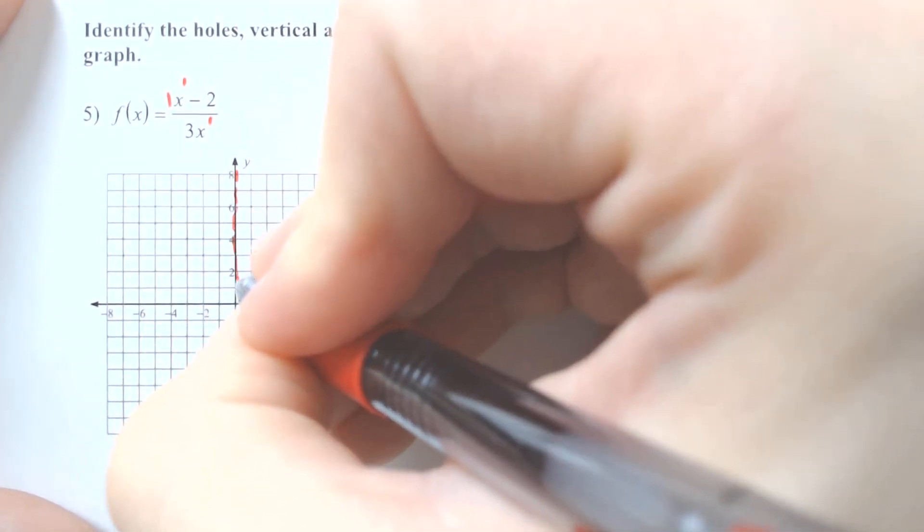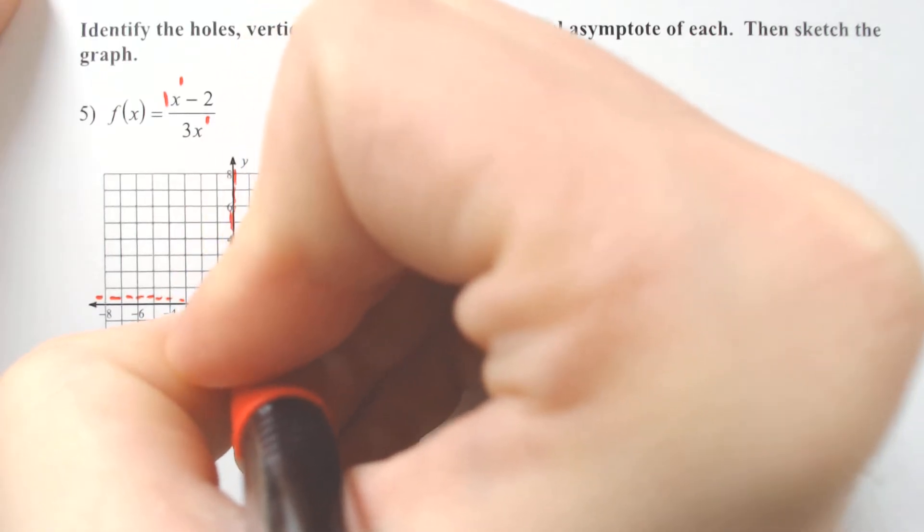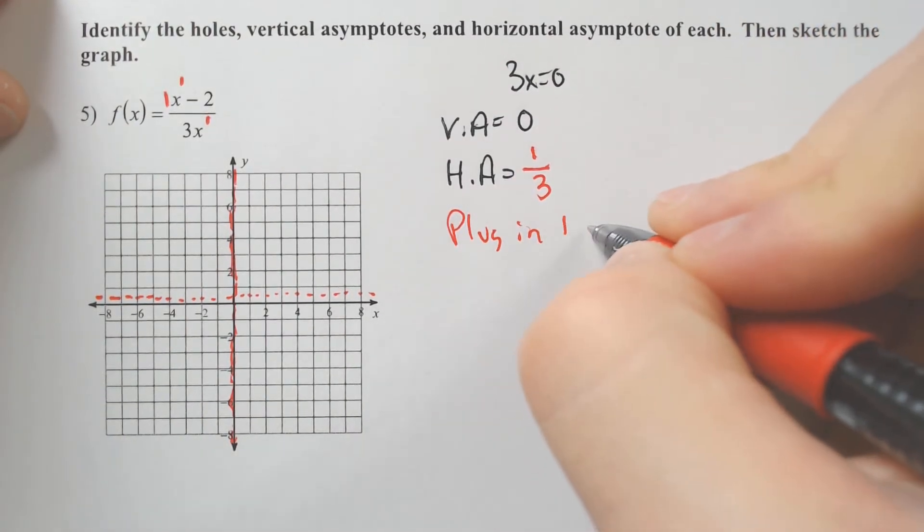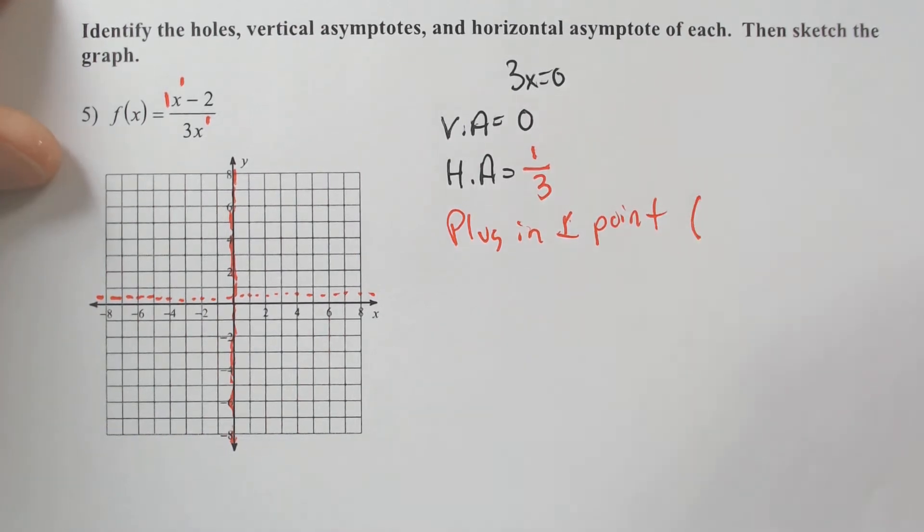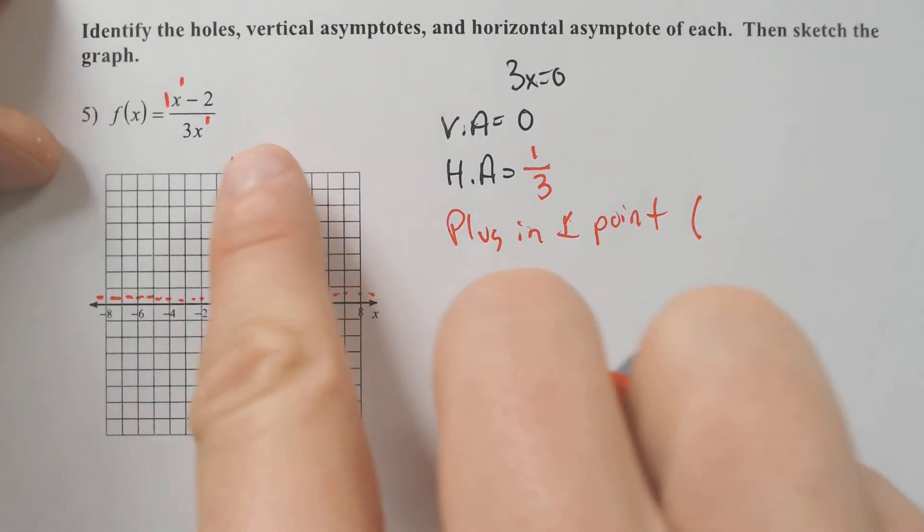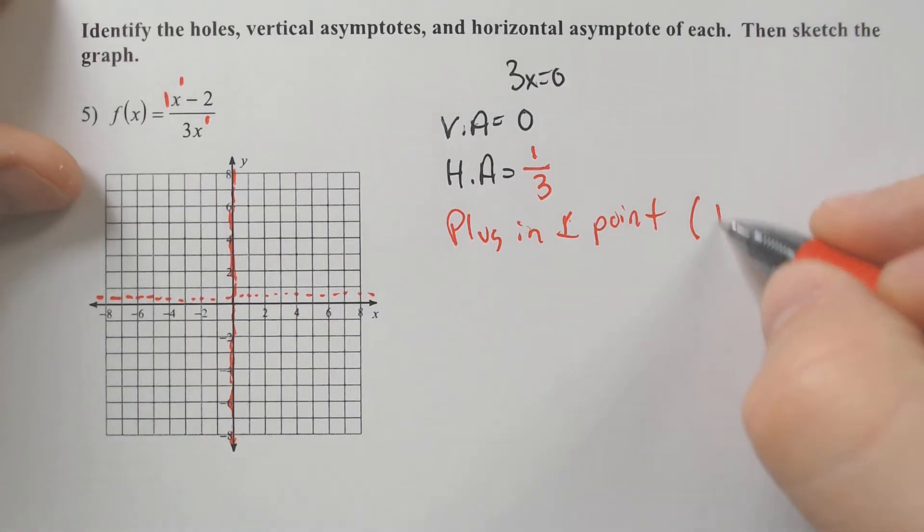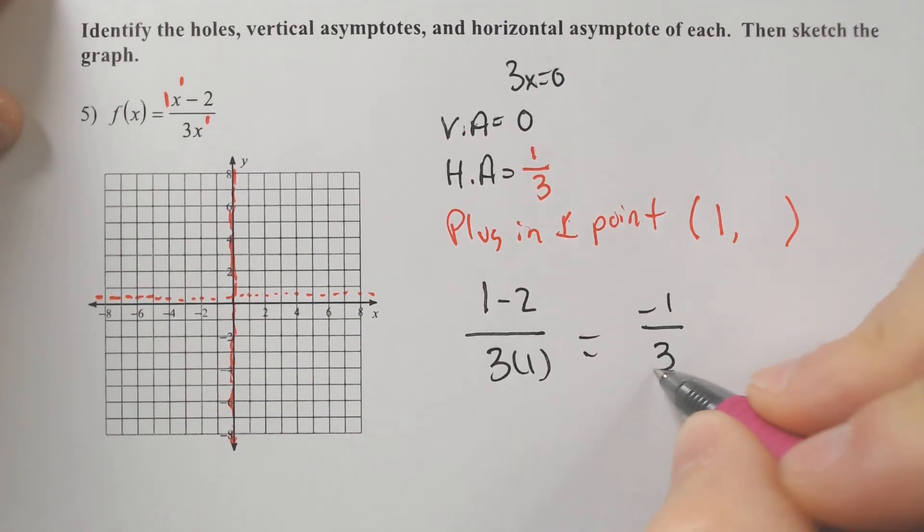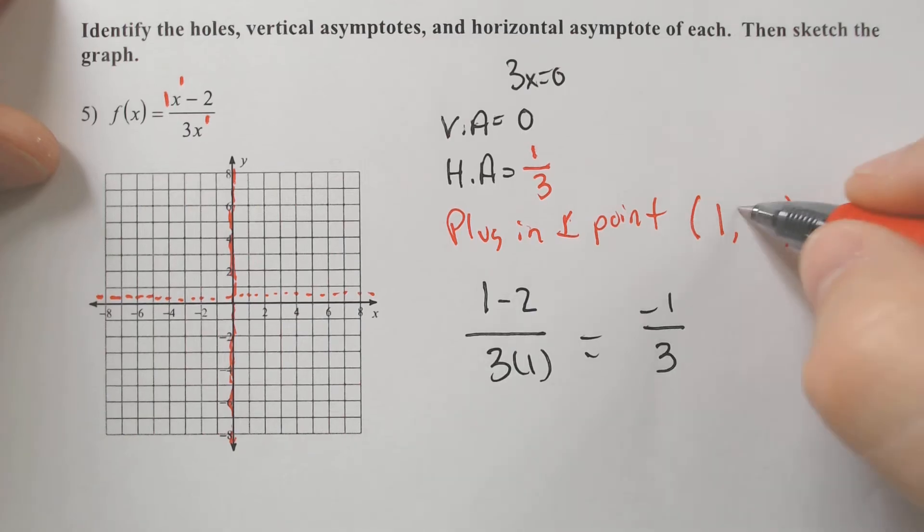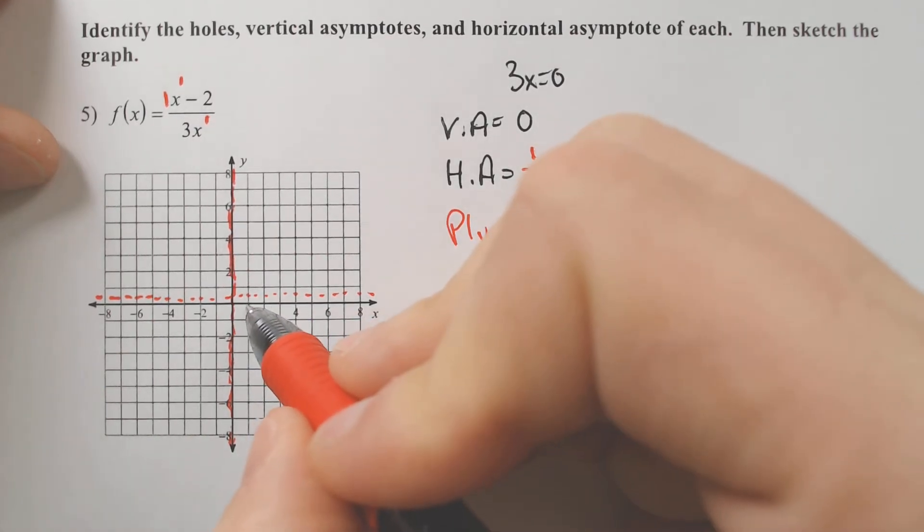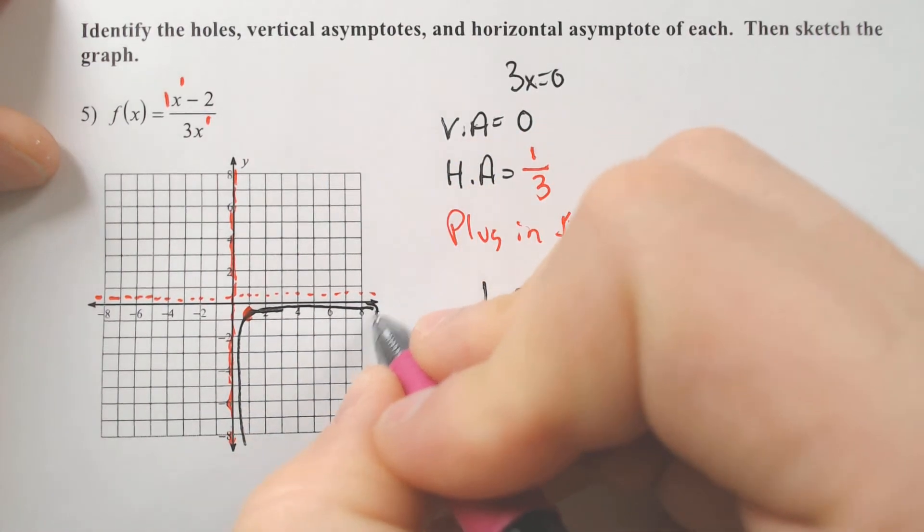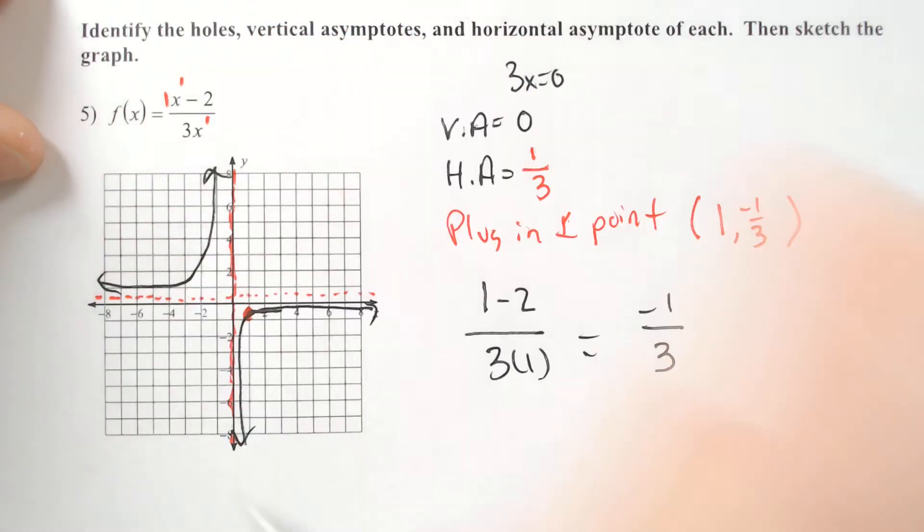So, vertical at zero, that would be right here. Horizontal asymptote at 1 third, so that's, like, just barely above zero. If you didn't know any better, you would probably assume it's at zero. We still have to plug in a point. If we plug in one point, I would plug in, again, the number zero, but I can't. If I plug in zero, it's not going to work. So, I've got to plug in any other point. I'm going to plug in the number 1, because 1 is a pretty easy number to plug in. 1 minus 2, 3 times 1, ends up being negative 1 over 3, which is definitely below the asymptote, which is what you're really looking for. Negative 1 over 3 is right about here. So, that is below our horizontal asymptote, so that tells me where I am going to be, in, like, the top right or the bottom left or something like that.